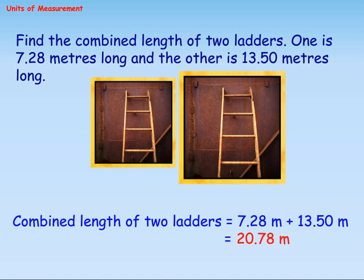Find the combined length of 2 ladders: one is 7.28 meters long and the other is 18.50 meters long. Combined length equals 7.28 meters plus 13.50 meters equals 20.78 meters.